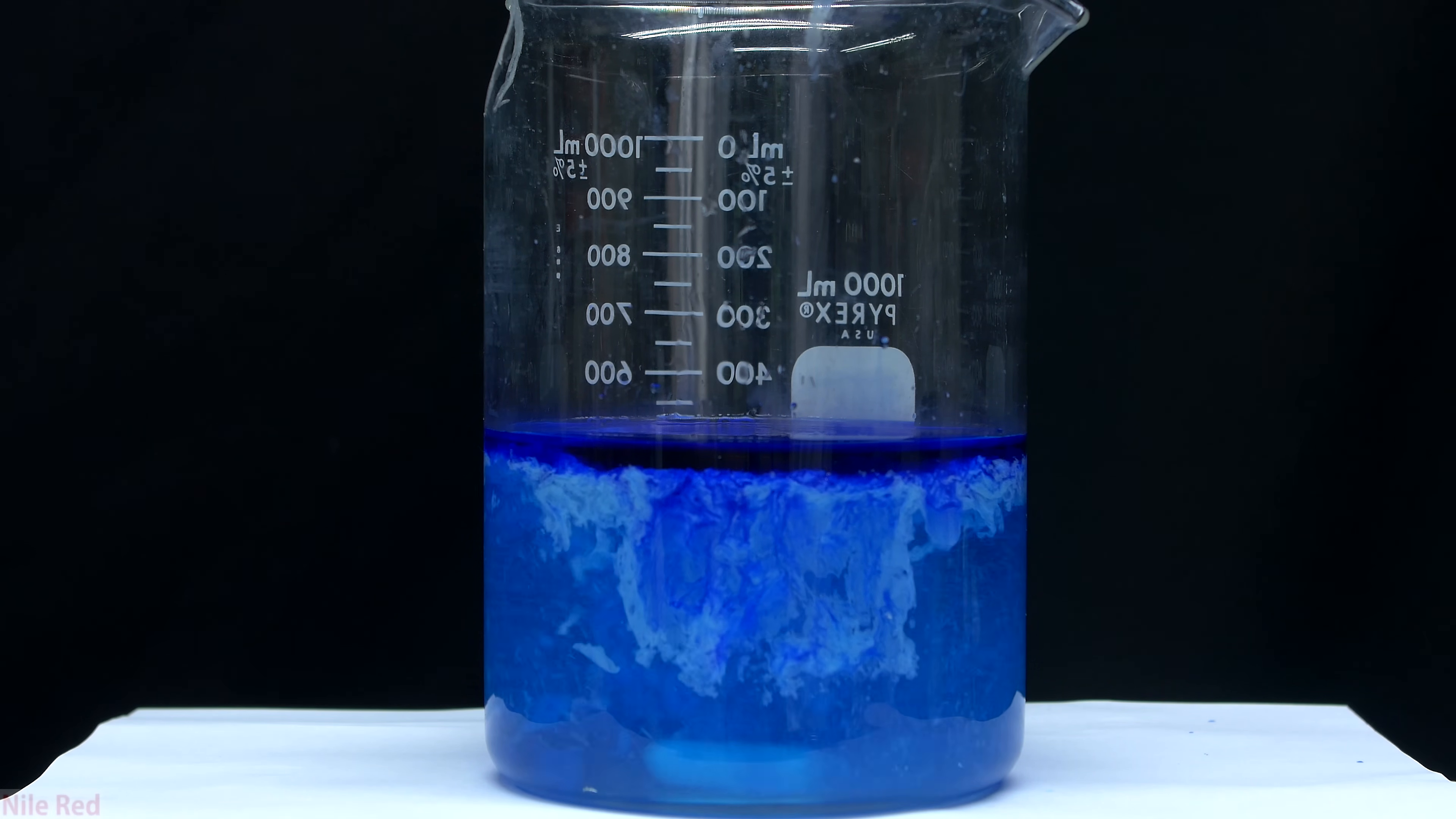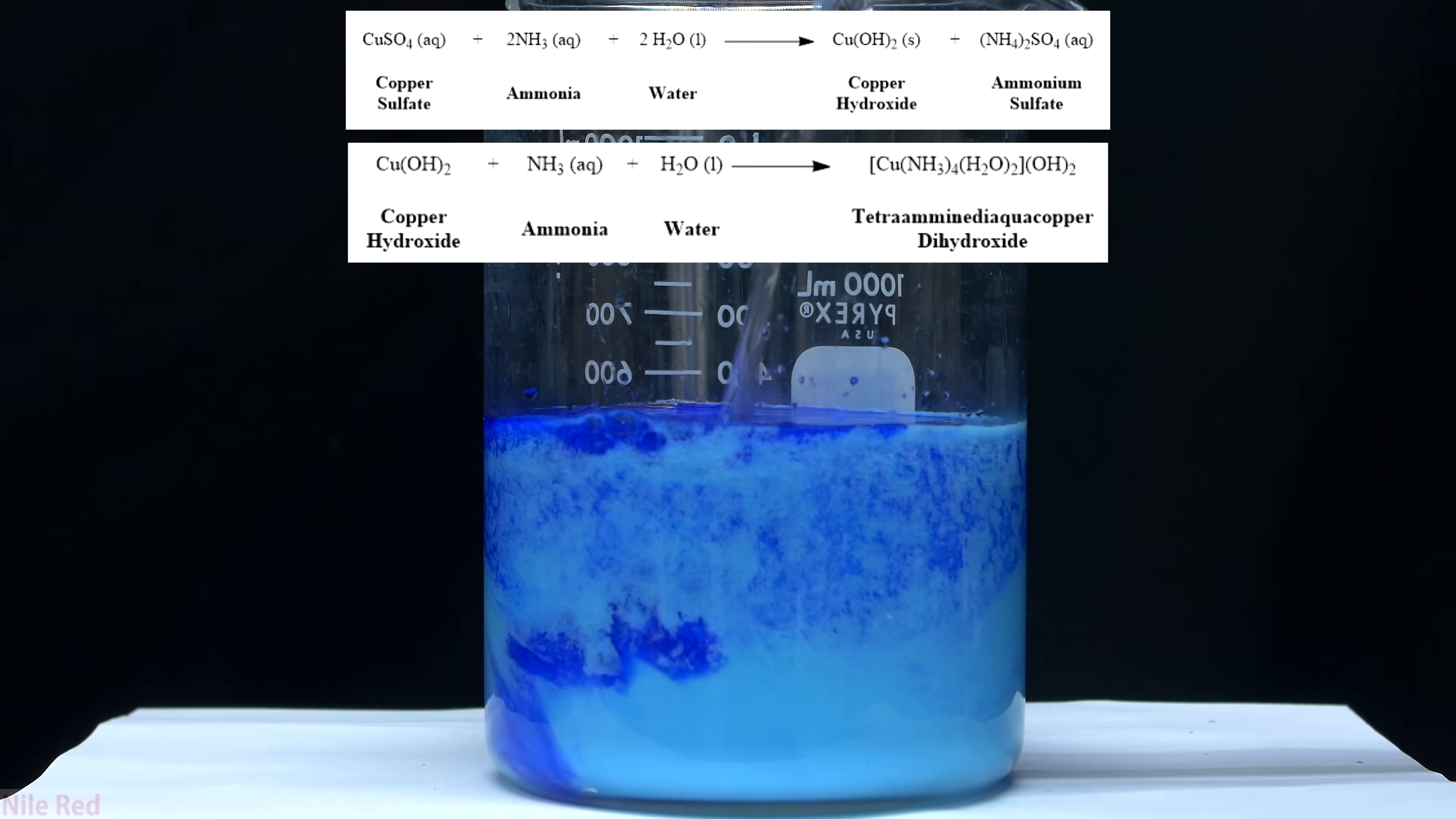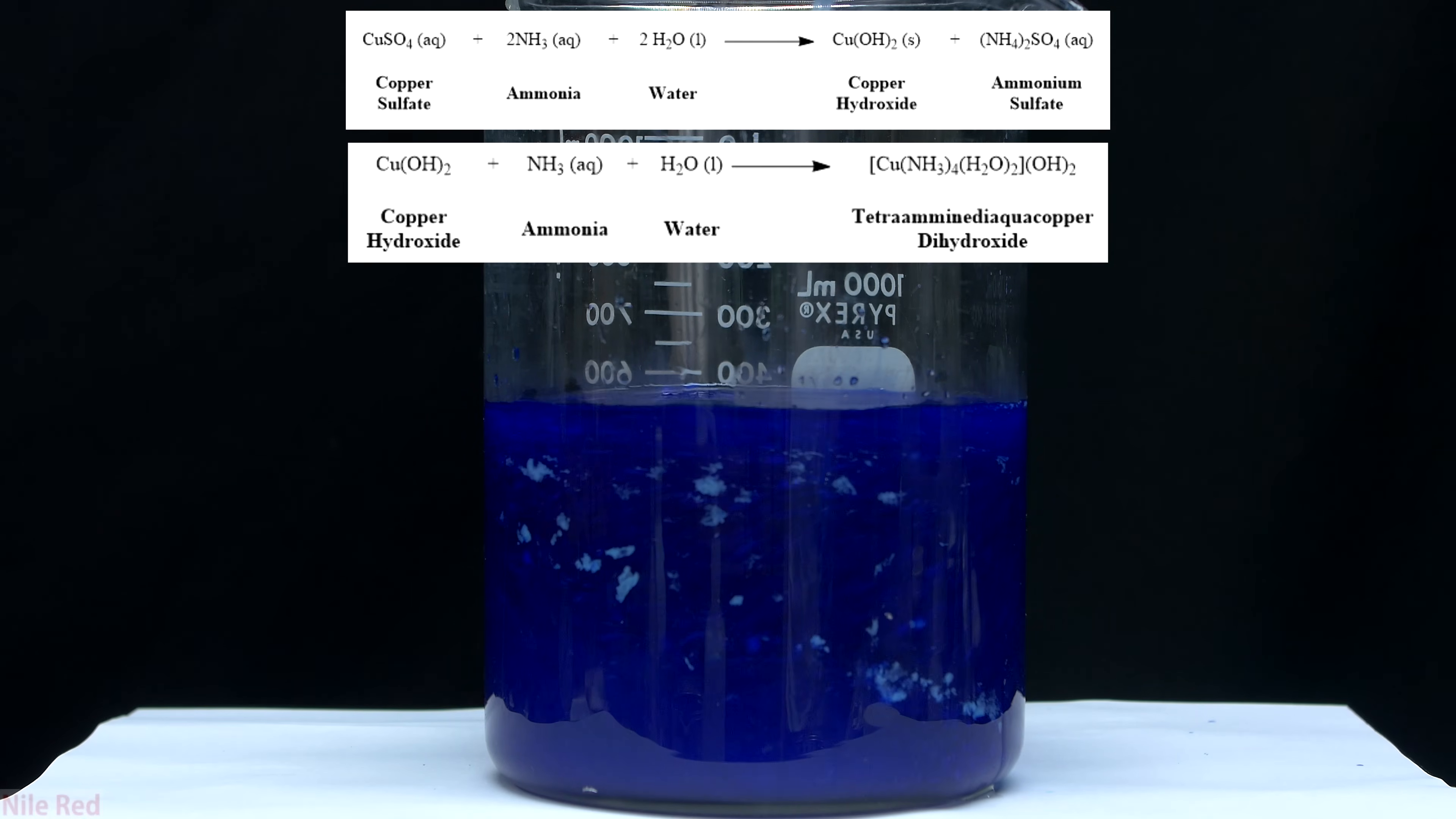This is because in total we're actually adding an excess of ammonia, and ammonia forms a dark blue complex with copper hydroxide. So basically what happens is as we add the ammonia and it reacts with the copper sulfate, the amount of copper sulfate present will slowly decrease. Eventually we'll reach a point where there's little to no copper sulfate left, and any ammonia that we add after this point will instead just complex with the copper hydroxide that's present. So you see as we add more the light blue color of the copper hydroxide slowly fades, and we're eventually left with a nearly black solution.